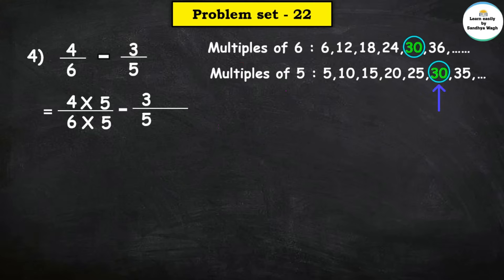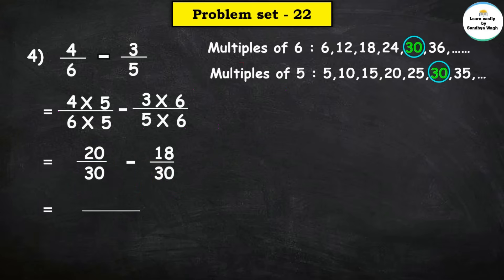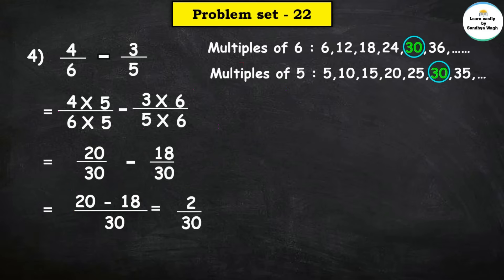Find the multiples of 6 and multiples of 5 — common multiple is 30. For 4 upon 6: 6 times 5 = 30, numerator 4 times 5 = 20. Minus 3 upon 5: 5 times 6 = 30, numerator 3 times 6 = 18. So: 20 upon 30 minus 18 upon 30. Common denominator 30. Numerator: 20 minus 18 = 2, denominator 30. Final answer is 2 upon 30.